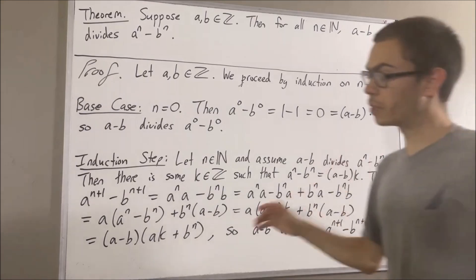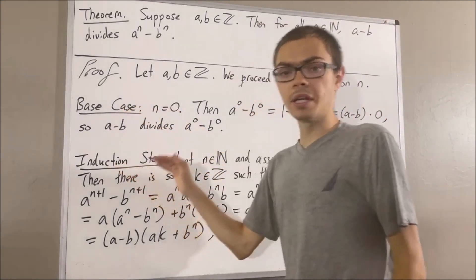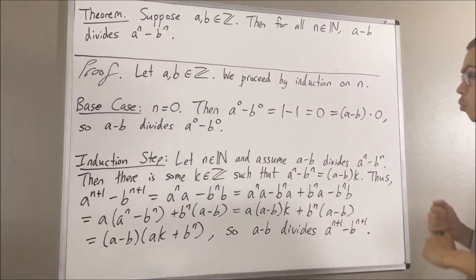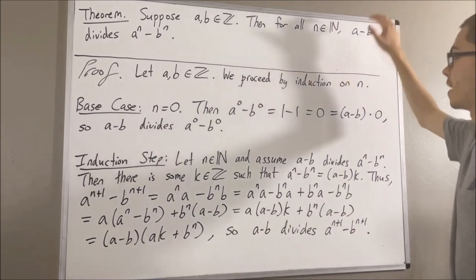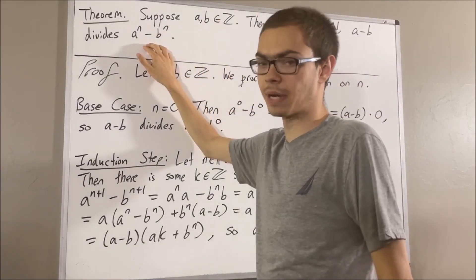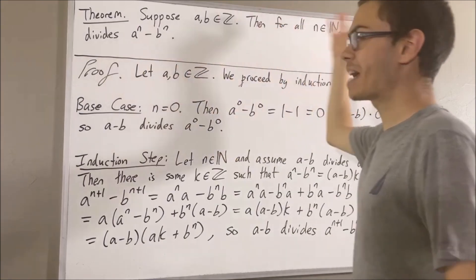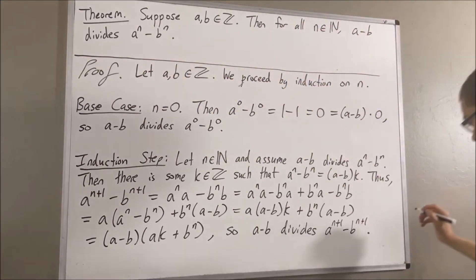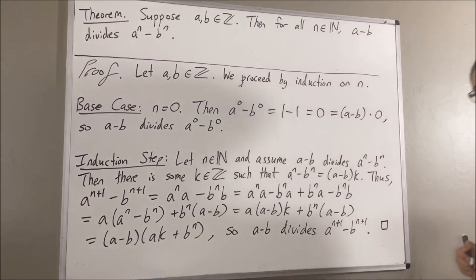Since we have completed both the base case and the induction step, this closes the induction. So we have shown for all natural numbers n, A minus B divides A to the n minus B to the n. And that is exactly what we wanted to prove. This completes the proof.